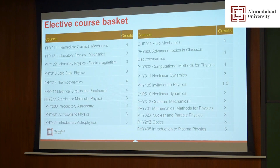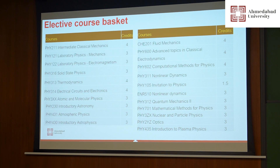In the elective course basket, we have courses from different areas of physics. For example, we have introductory astronomy and introductory astrophysics — if you are interested in stars and galaxies, you should take these. We also have courses on atmospheric physics, solid state physics, and thermodynamics. If you are interested in computational science, there is an elective on computational methods for physics. Additionally, we have an advanced course on quantum mechanics, a course on optics, and a course on plasma physics. Depending on student interest, one can choose from this basket.